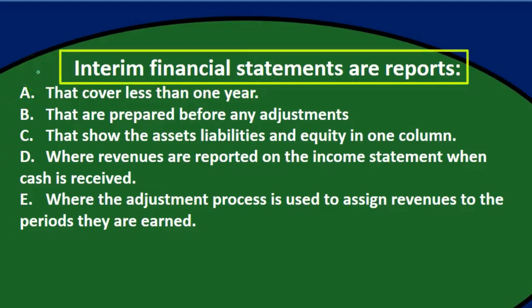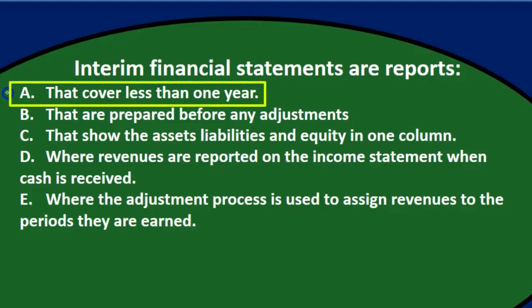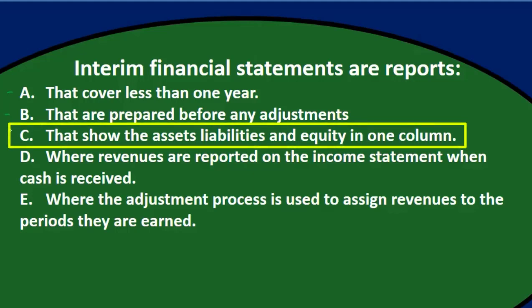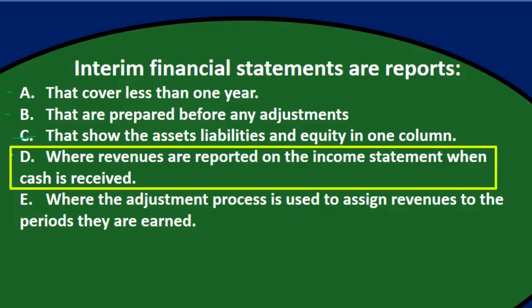That cover less than one year — that looks like a plausible answer. That are prepared before any adjustments — possibly, we're saying they're interim, they're not quite done yet, I'll leave that for now. That show assets, liabilities, and equity in one column — that sounds kind of arbitrary, I don't think they're going to say it has to do with one column, just formatting. Where revenues are reported on the income statement when cash is received — that's an accrual principle, but I'm not sure it applies to interim financial statements specifically, so that's probably not it.